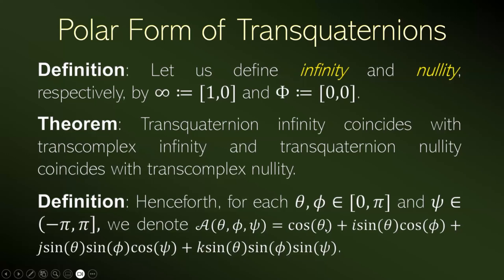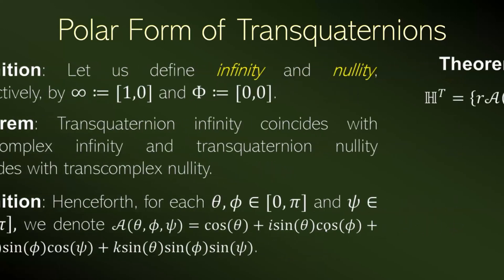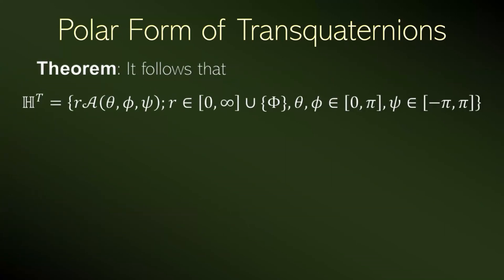We have the theorem proved in the paper that all transquaternion numbers can be written as the product of a radius and its arguments. The radius can be zero, can be any positive real number, can be infinity — the transreal number infinity — or can be nullity, the transquaternion number nullity.